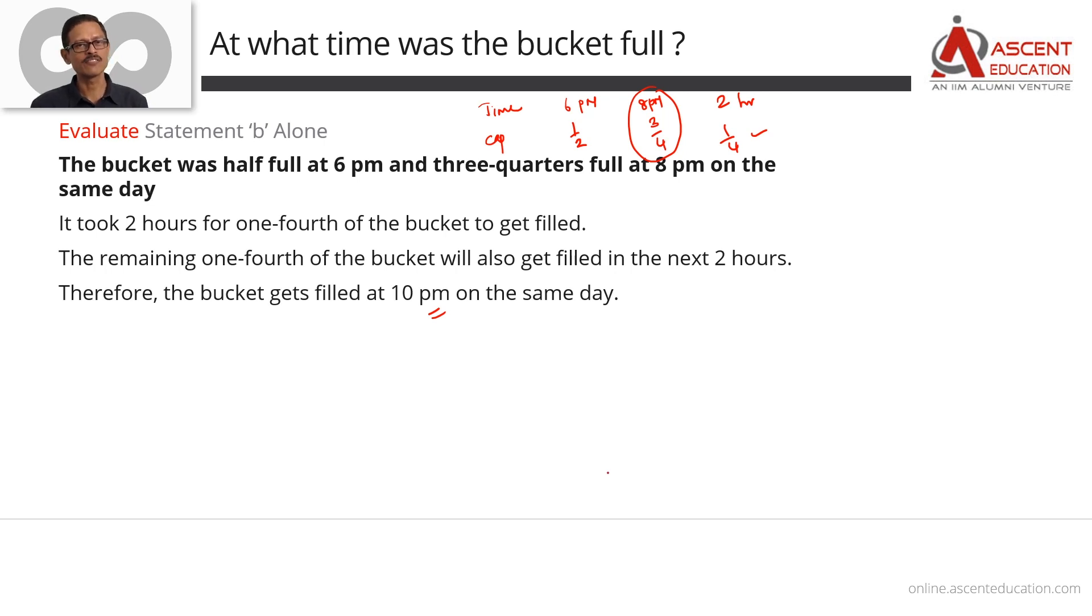Have we answered the question? Yes, at what time was the bucket full? Run through it once more. At 6 pm the bucket is half full, at 8 pm three-quarters full. How long did it take? 2 hours. So once a quarter fills in 2 hours, from 8 o'clock when three-fourths of the bucket is filled, you have an additional 2 hours. 8 plus 2 hours is 10 o'clock on the same day - the bucket will get filled. So statement B alone was sufficient to answer this question.